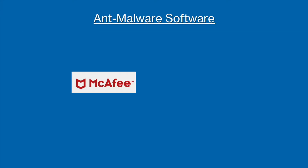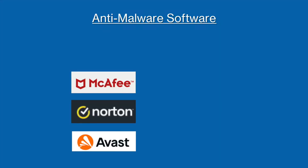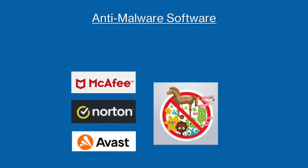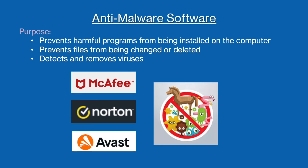You may have heard of software like McAfee, Norton and Avast being installed on your PC before. These are called anti-malware software. Anti-malware software can be used to prevent, find and remove malware from a computer or network to avoid files and accounts being tampered with.